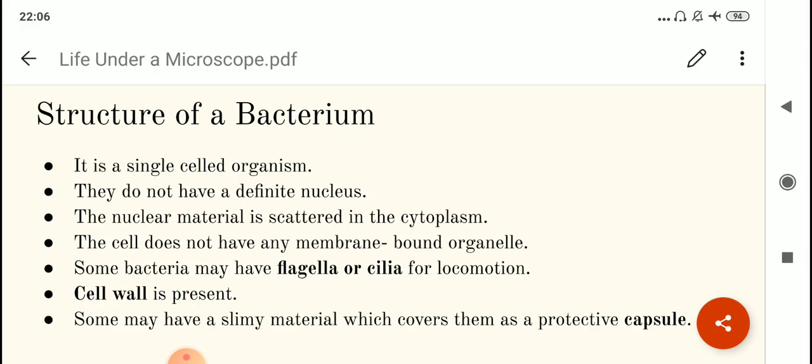So, well-defined membrane-bound organelles are missing in bacterium. The nuclear material, since it is not having a defined nucleus, so the nuclear material is scattered in the cytoplasm. Now, some bacteria may have a flagella or cilia for locomotion. The diagram that is given in your book, there you can see, it has a green-colored thread-like structure, that is the flagella.